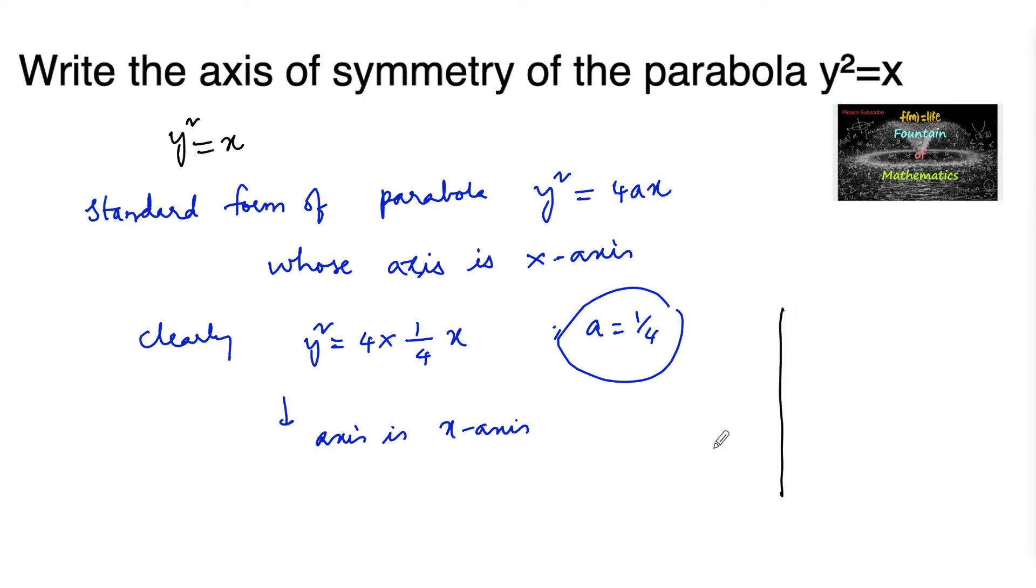The shape of the parabola... So this is y²=x with the focus at the point (1/4, 0).